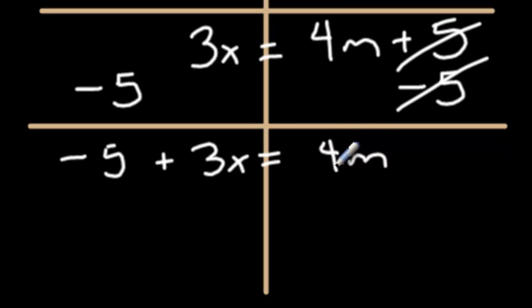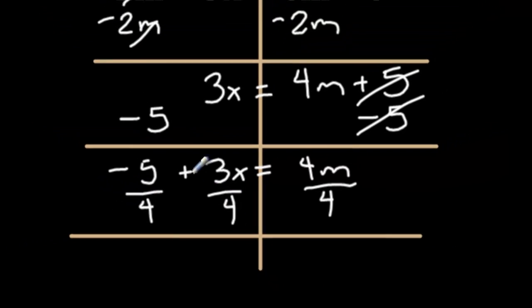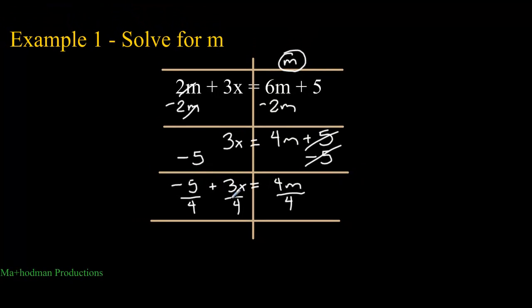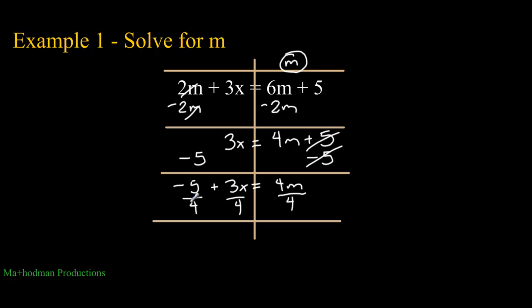If a number is next to a letter, that's being multiplied to that variable, 4 times m. To undo that 4, same exact rules as your other equations, divide it by 4. The only difference is that each term on the left has to be divided by 4. Some of your teachers are fine with leaving your answers as a fraction as long as you simplify it. Or if you want to take it a step further, you can turn these fractions into decimals by just dividing them. Negative 5 divided by 4, that's negative 1.25. 3 divided by 4 is 0.75x. And the 4s cancel out and you're left with an m. Since m is all by itself and m equals something, your equation is solved and you can stop right there.